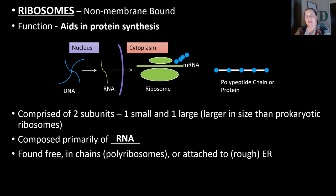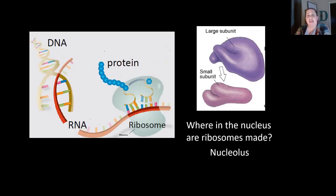The endoplasmic reticulum is a structure — some of it is smooth and some of it is rough. The part that is rough is studded with ribosomes — you could even say it's bedazzled with ribosomes. So DNA is copied into RNA, RNA can leave the nucleus and go to the ribosome, and a protein is created. The ribosome has a large unit and a small unit. Ribosomes are made in the nucleolus.